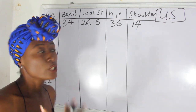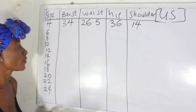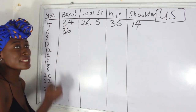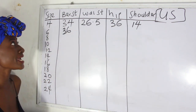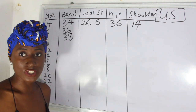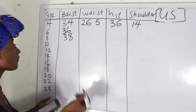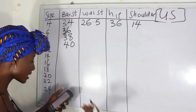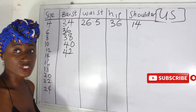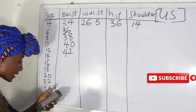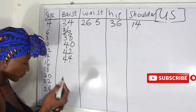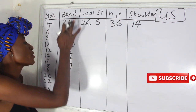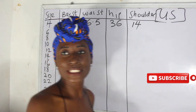For size 6, the bust measurement is 36 inches. For size 8 the bust measurement is 38 inches. For size 10 we have 40 inches. For size 12 we have 42 inches. For size 14 we have 44 inches. Notice that from size 4 to size 14 we are basically adding 2 inches to the bust measurement.